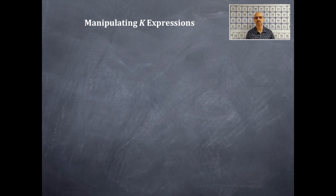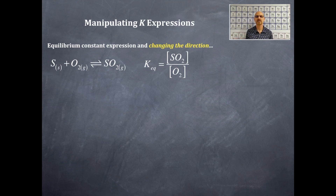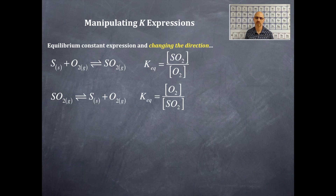We're still talking about manipulating K expressions. We're going to write the equilibrium constant expression and change the direction. If we take the reaction and reverse it — flip the reactants and the products — the new K-EQ is the reciprocal of what we had before. So if you change the direction, you take the reciprocal of the K-EQ.